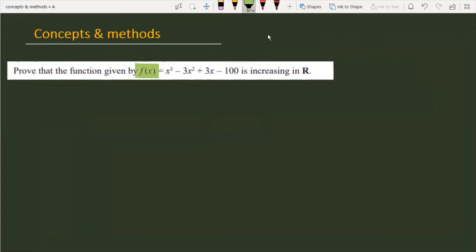The question is: f(x) = x³ - 3x² + 3x - 100. Prove this function is increasing in real numbers. In the question we have to prove the given function is always increasing.